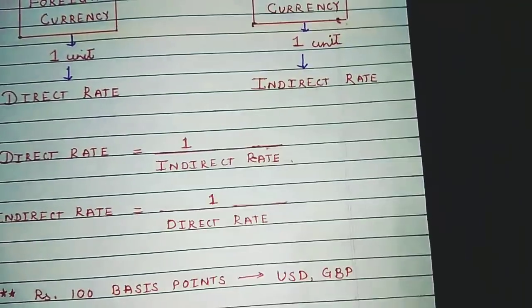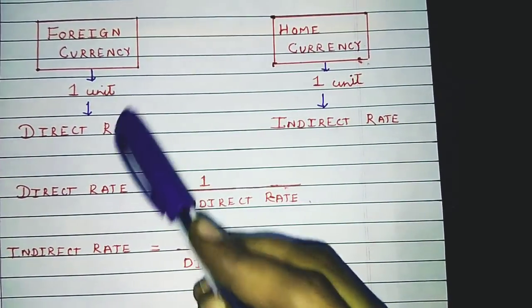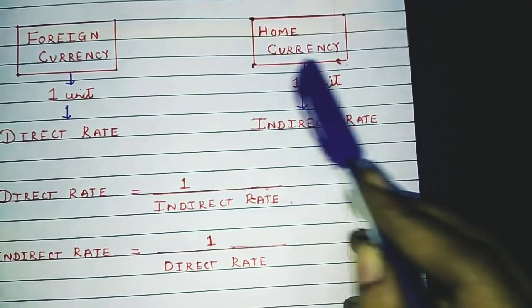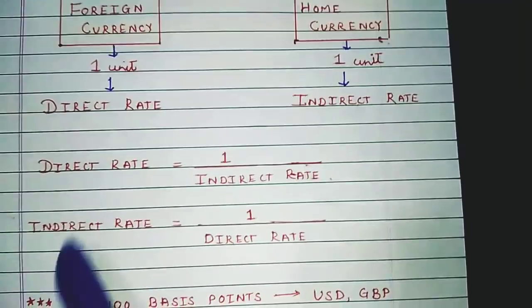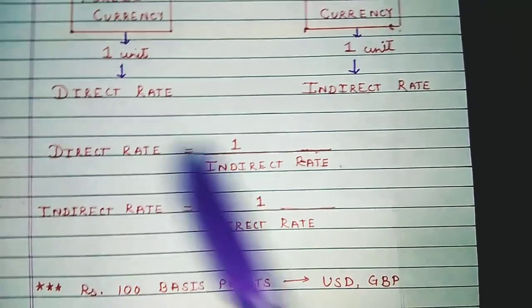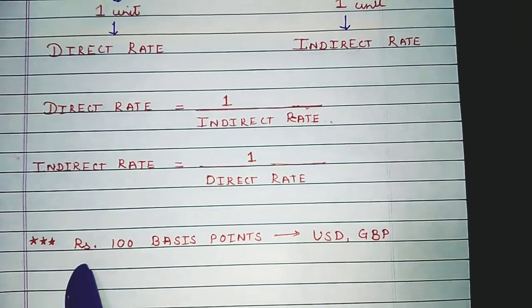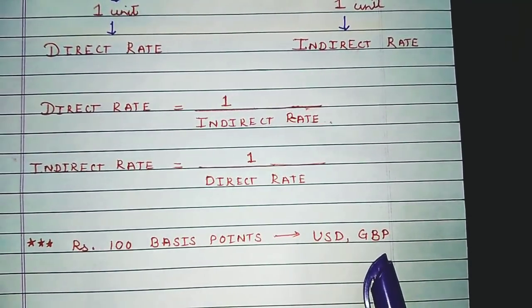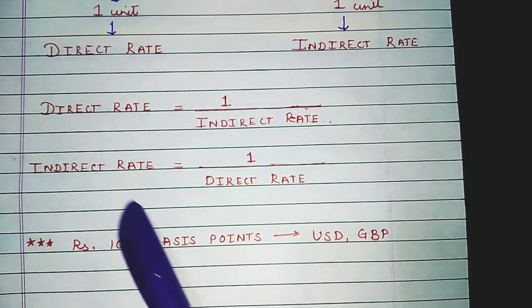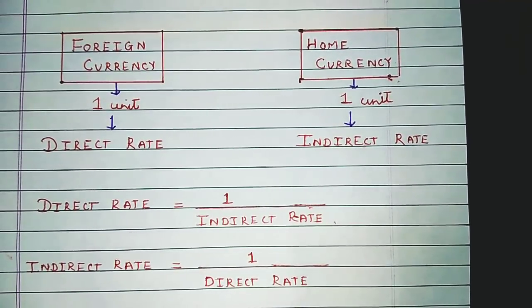To summarize: whenever we express foreign currency in one unit, that is the direct rate; whenever we express home currency in one unit, that is the indirect rate. We can convert between them, remembering that when converting Indian rupees to USD or GBP, take Indian rupees as 100 basis points. Keep watching for further numerical details on international finance. All the best for the coming examination. Thank you.